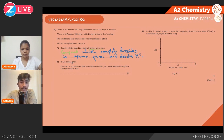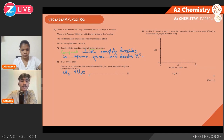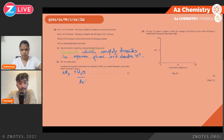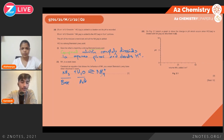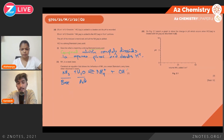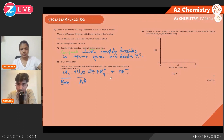Ammonia is a weak Brønsted-Lowry base. When dissolved in water, a base accepts protons. Here water acts as the proton donor (acid) and ammonia acts as the base. Water donates a proton to ammonia, giving: NH3 + H2O ⇌ NH4+ + OH−.